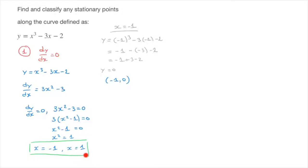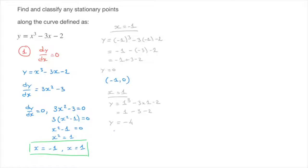We now calculate the y-coordinate of the second stationary point, which has x-coordinate equal to 1. When x equals 1, y equals 1 cubed minus 3 times 1 minus 2, which equals 1 minus 3 minus 2, giving y equals negative 4. So the second stationary point has coordinates 1, negative 4.